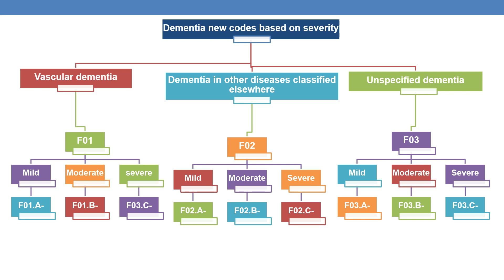Dementia is mainly categorized into three types: vascular dementia, dementia in other diseases classified elsewhere, and unspecified dementia. Vascular dementia is indicated by category F01, dementia in other diseases classified elsewhere is indicated by category F02, and unspecified dementia is indicated by category F03.